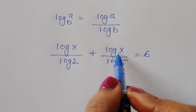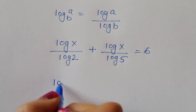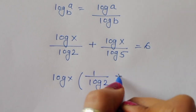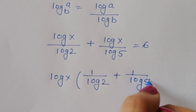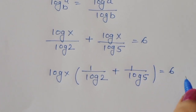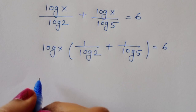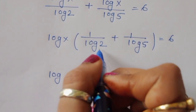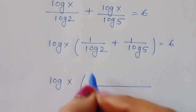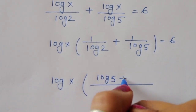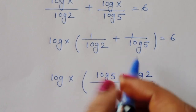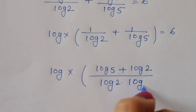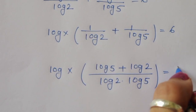Now we can take log of x common. It will become: log(x) times [1/log(2) plus 1/log(5)] is equal to 6. We then do cross multiplication, giving us: log(x) times [log(5) plus log(2)] divided by [log(2) times log(5)] is equal to 6.